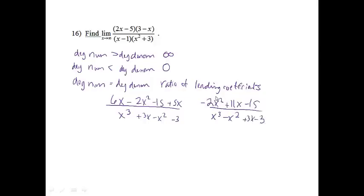Comparing the degree in the numerator and the degree in the denominator, the degree in the denominator is bigger, which shows that the limit will equal zero.